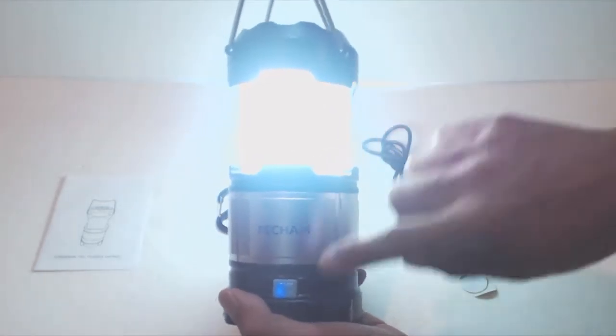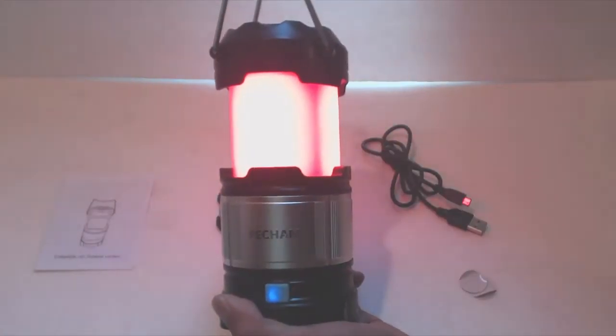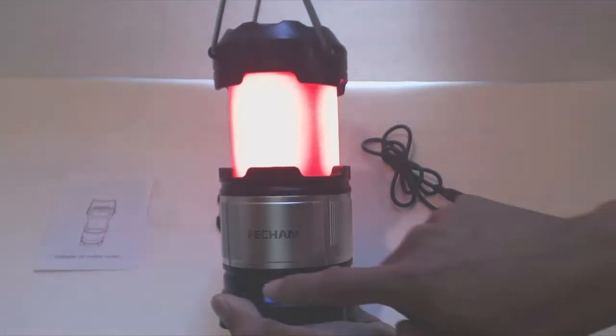The lantern weighs about 13 ounces with both sets of batteries present. To turn on the light, lift the handles up and pull the light portion out of the aluminum case. When fully extended, the lantern will stand about 10 inches tall.